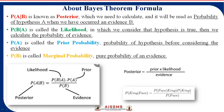In Bayes' theorem, every part of the formula has a naming convention. Probability of A given B is called the posterior. Probability of B given A is called the likelihood. Probability of A is called the prior. And probability of B is called the evidence. These are the naming conventions used in Bayes' theorem.